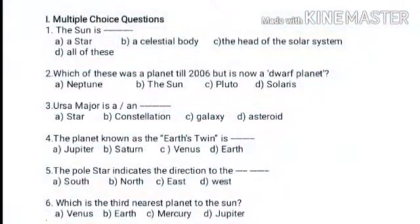We are going to see multiple choice questions. First one: the Sun is a — first option, a star; second option, a celestial body; third option, the head of the solar system; fourth option, all of these. Which is the correct answer? All of these.